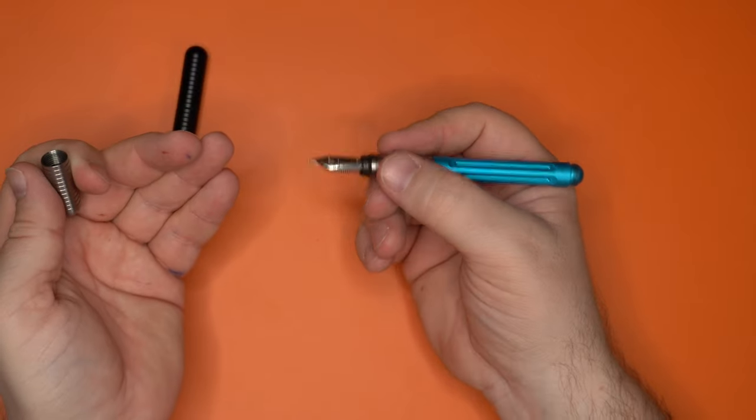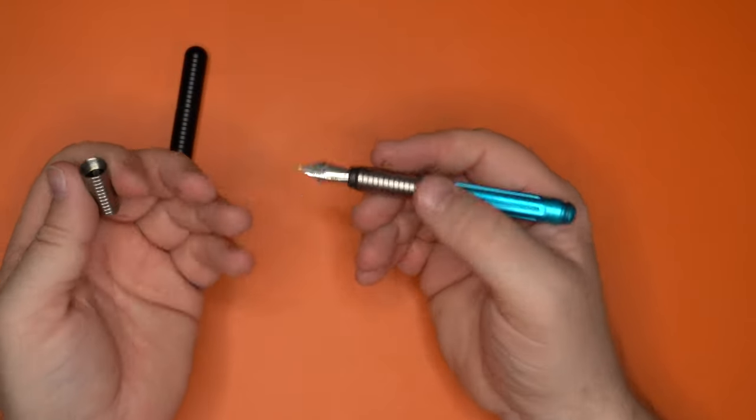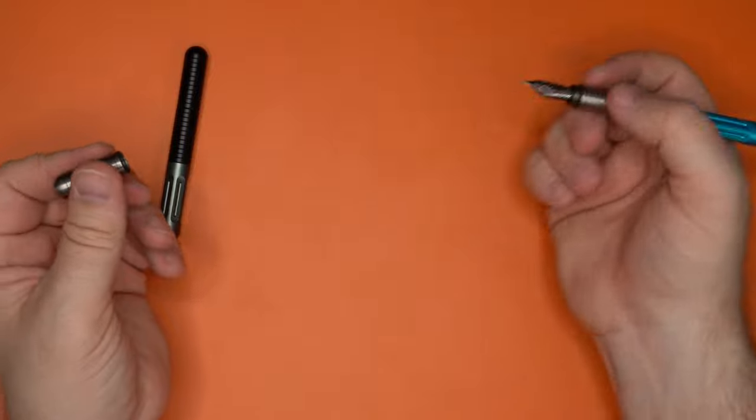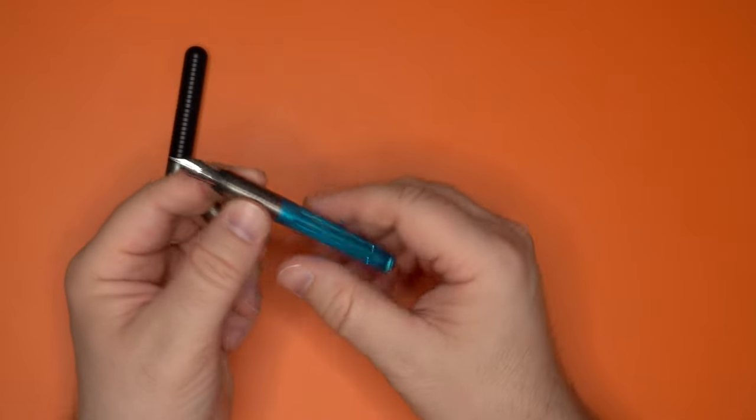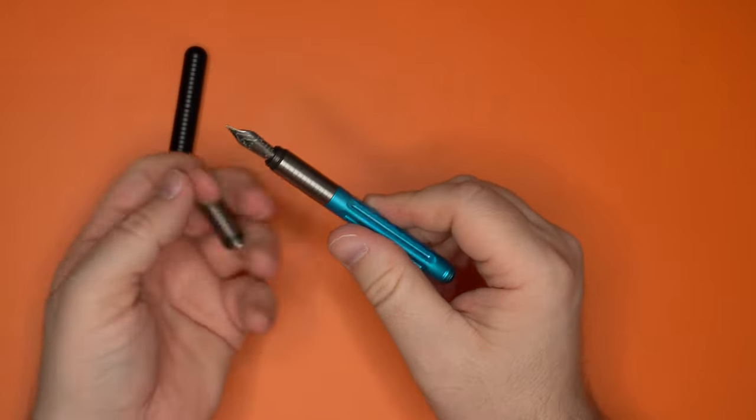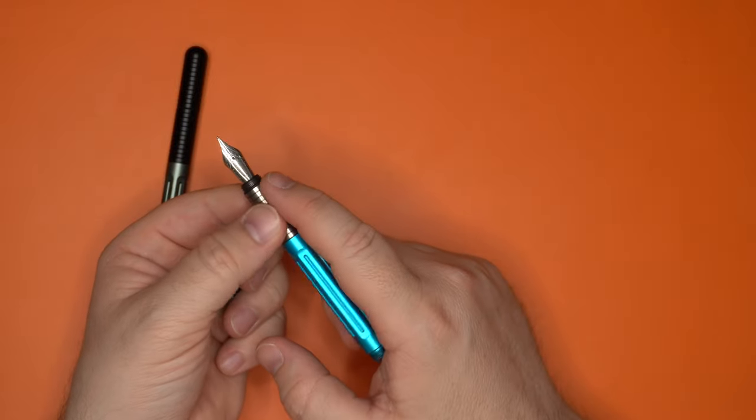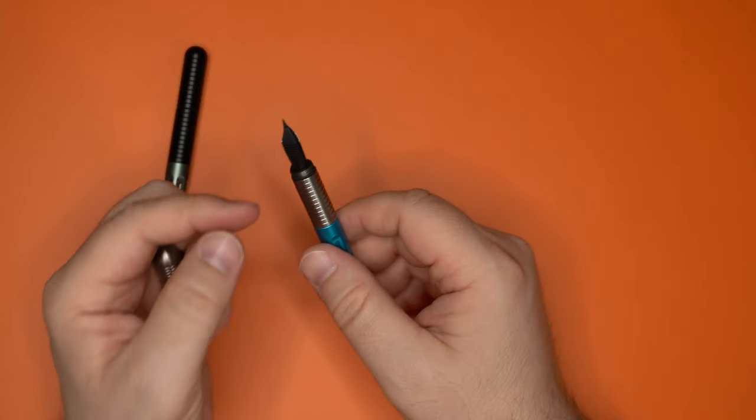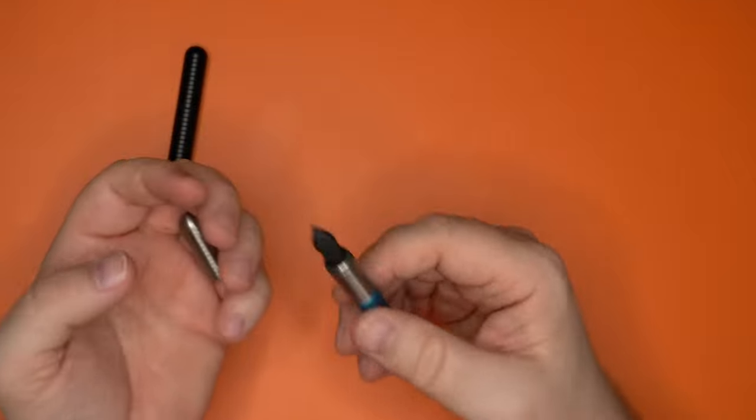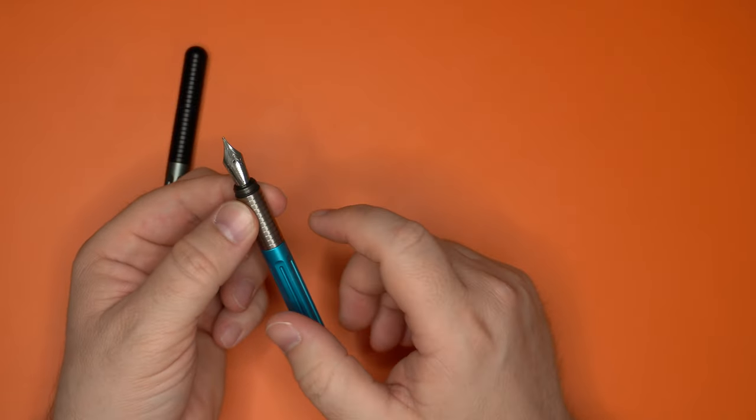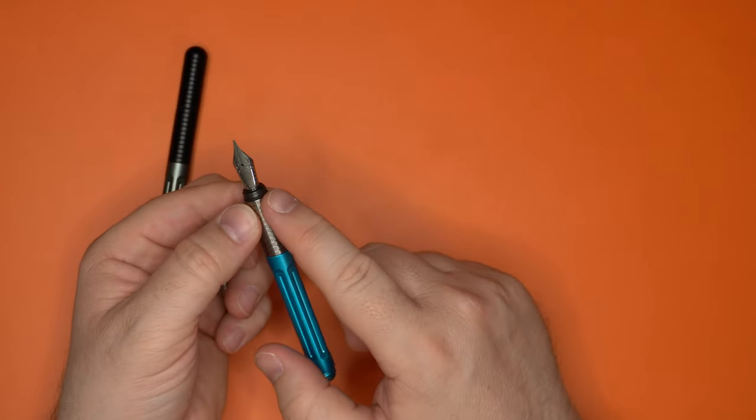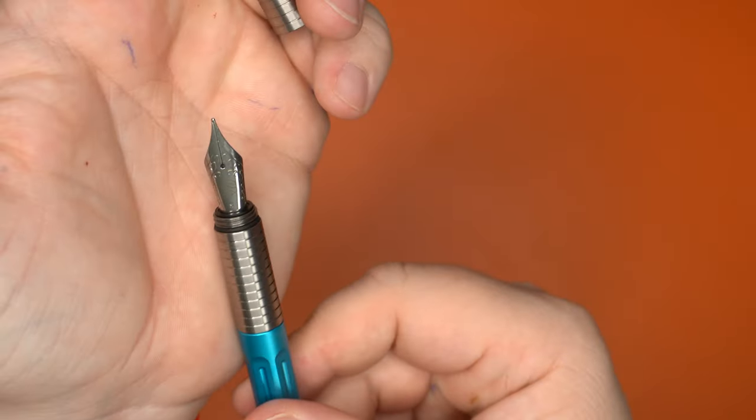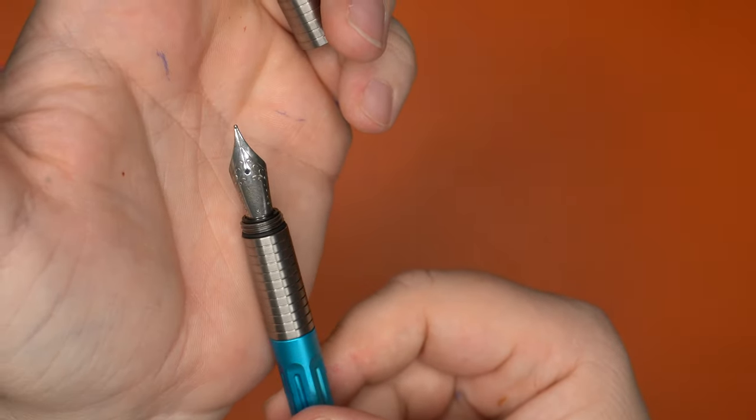These are No. 6 Yovo nibs that come in all the standard No. 6 Yovo nib sizes, extra fine up through broad. Maybe he has 1.1s and that sort of thing, but it is for sure that Yovo nibs are very easy to swap between pens, and there are lots of them available out there with custom grinds and different kinds of logos.